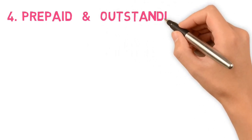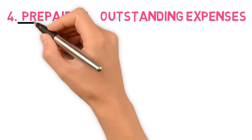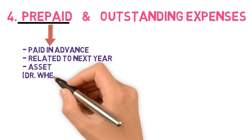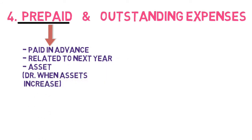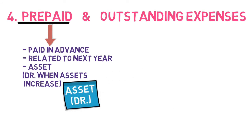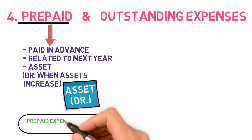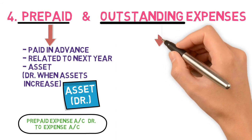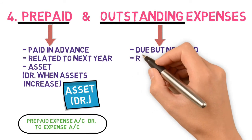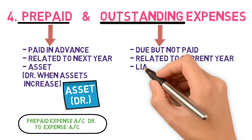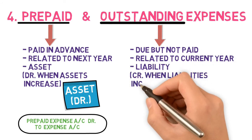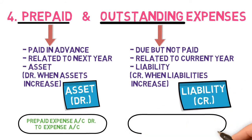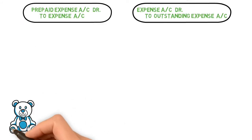Finally, we have prepaid and outstanding expenses. Prepaid expenses are expenses paid in advance, meaning they are related to the next year. Anything paid in advance is always your asset, and since assets increase on the debit side, the journal entry is: Prepaid Expenses Account debit, to Expense Account. Outstanding expenses are those which are due but have not been paid — they are related to the current year and are therefore a liability. Liabilities increase on the credit side, so the entry is: Expense Account debit, to Outstanding Expenses Account.